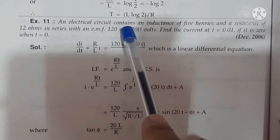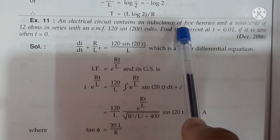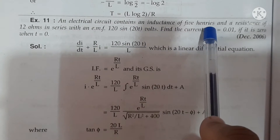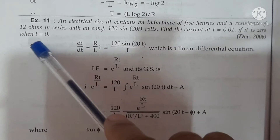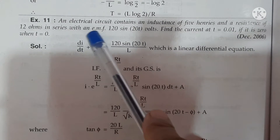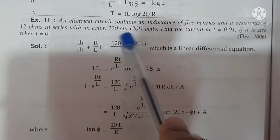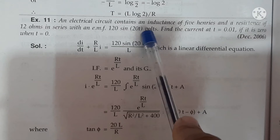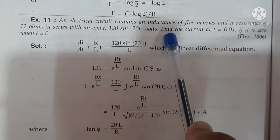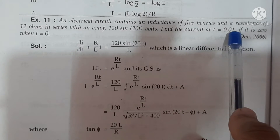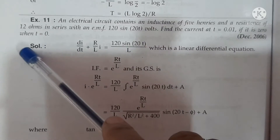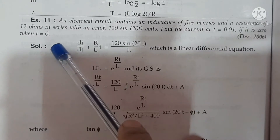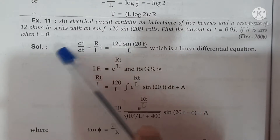An electrical circuit contains an inductance of 5 Henrys and a resistance of 12 ohms in series with an EMF of 120 sin(20T) volts. Find the current at T equal to 0.01 if the current is 0 when T is equal to 0.